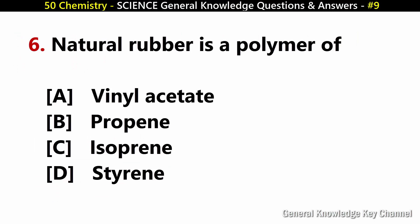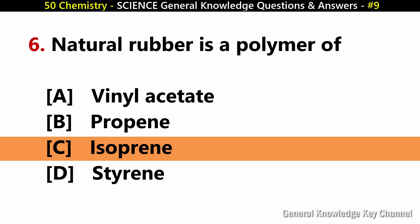Natural rubber is a polymer of? Answer C: Isoprene.